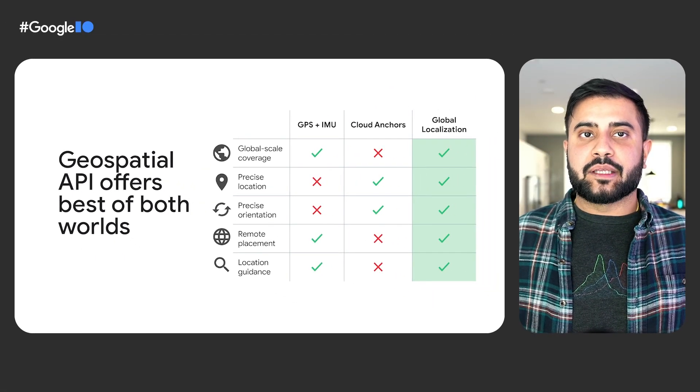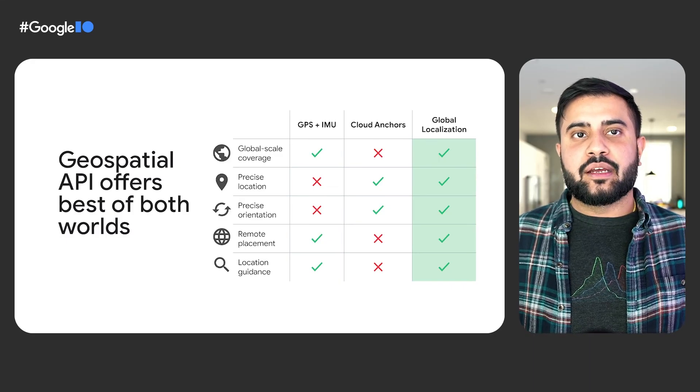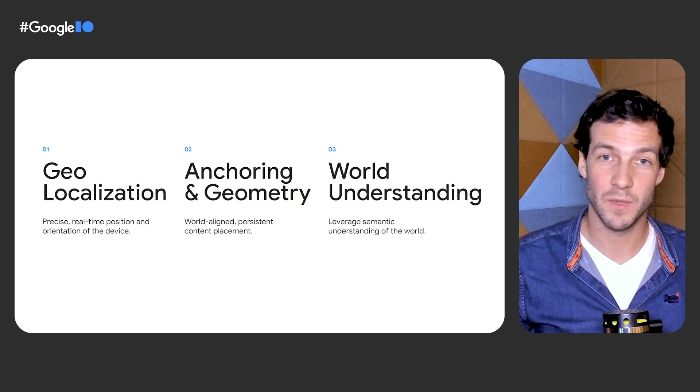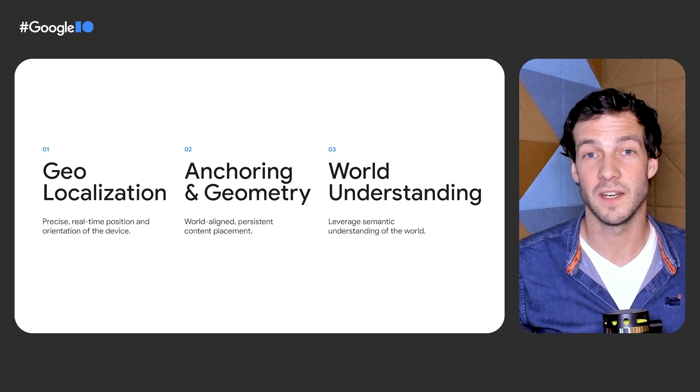We hope to surface additional capabilities over time to help you build truly next-gen experiences. I'll now hand it over to Simon to unpack the underlying technologies powering the Geospatial API and the capabilities it gives you to turn the world into your canvas. Thanks. In the following minutes, I'll walk you through the three pillars of the Geospatial API: Geolocalization, Geometry and Anchoring, as well as World Understanding.